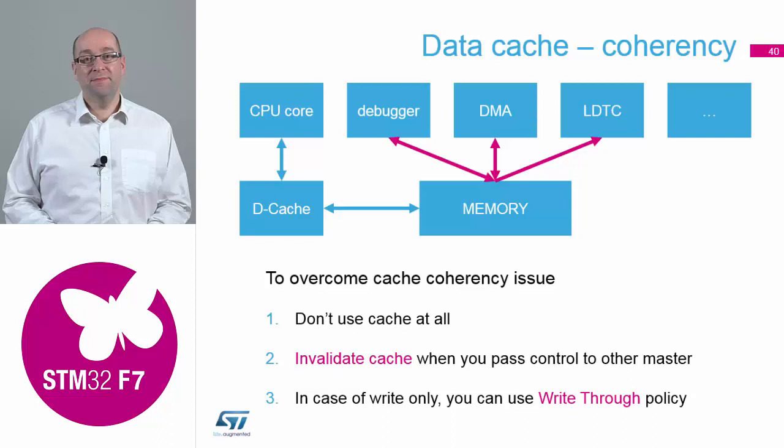Because on the TCMs, you saw there was a module so that the DMAs could talk to the memories on the TCM bus. The cache is really, really internal to the core, so there's no way for the DMAs to access the cache.